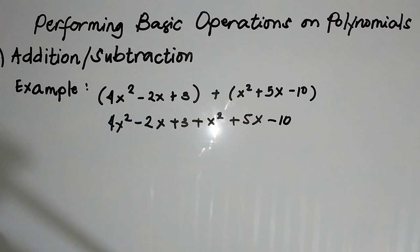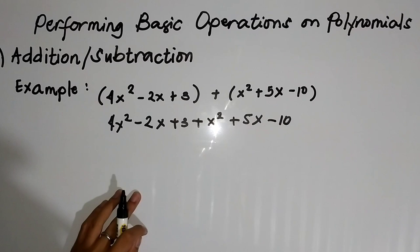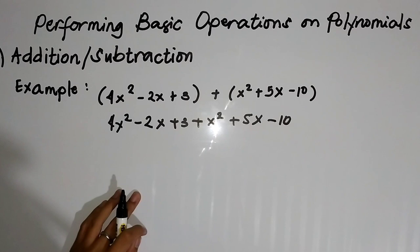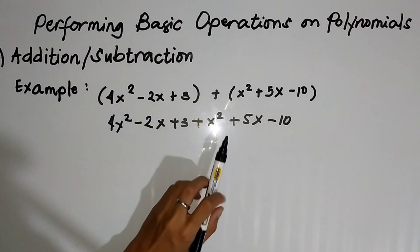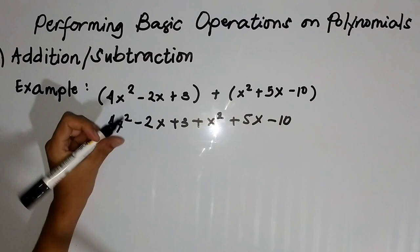Now proceed tayo sa third step: combining like terms. Yung sinasabi nating like terms ay yung terms na mayroong the same variables and the same exponent. To combine like terms, you will just add these terms. When adding monomials, you will just add the coefficients of the terms — the variable and exponent must be the same. In our case, we have 4x squared and x squared, so we add coefficients 4 and 1: 4x squared plus x squared equals 5x squared.